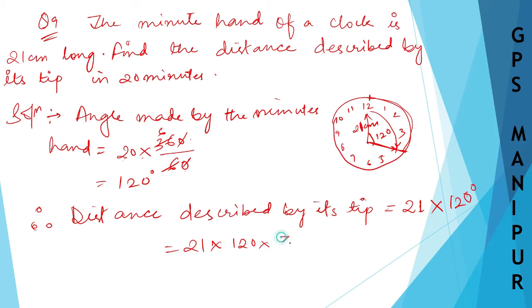Pi by 180. And I can cancel: zero, zero out, 2, 3, 4, the 12, 3, 6, the 18, 2 to the 4, 2, 3, the 6, and 3, 7, the 21. So 7 into 2 is 14 pi.